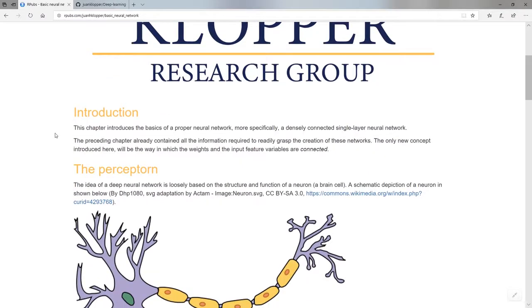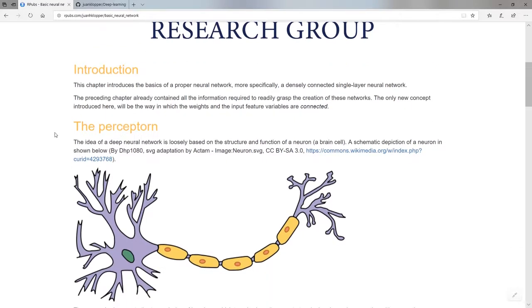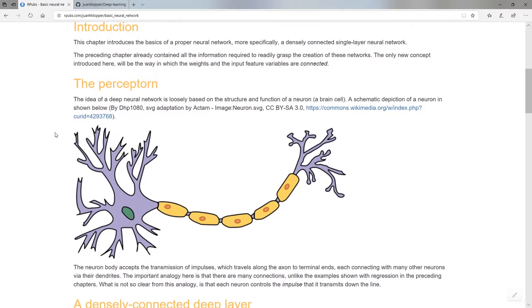I'm going to build on everything that has gone before and we're really going to construct this network. And it's going to look very familiar if you remember what we discussed when we looked at linear regression and logistic regression. The whole idea behind a deep neural network is that it's very loosely based on this idea of a brain cell, a neuron.